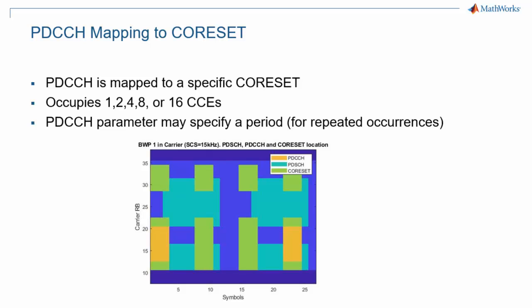A PDCCH is mapped to a specific core set. To summarize, orange can only be on top of green in this picture. A PDCCH occupies 1, 2, 4, 8, or 16 control channel elements, or CCEs, where 1 CCE corresponds to 6 resource element groups. One of the PDCCH configuration parameters may specify a period for repeated occurrences.